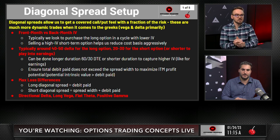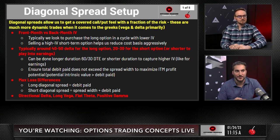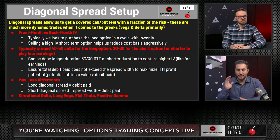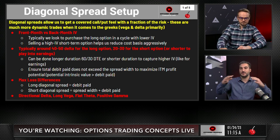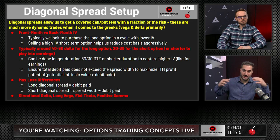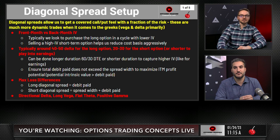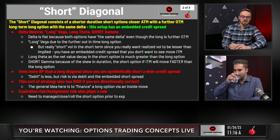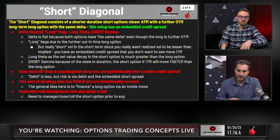When it comes to delta, vega, theta, and gamma, they're slightly different depending on whether you're in the short or long setup. But one thing that remains true is that you have long vega exposure with both, because your long option is further out in time. A short diagonal is essentially a similar setup to an out-of-the-money credit spread, but your long option has a further expiration than the short. You're selling a closer at-the-money option and buying a same-delta option that's further out in time and further out of the money.